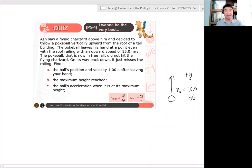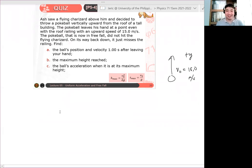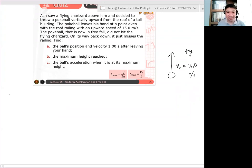Note here that we are now using Y as our coordinate, not X, because we are talking about the vertical direction. Kanina, sa uniform accelerated motion, we are talking of X. Now, we are talking of Y. X tapos Y. Okay lang yan. So, yun. Letter A.